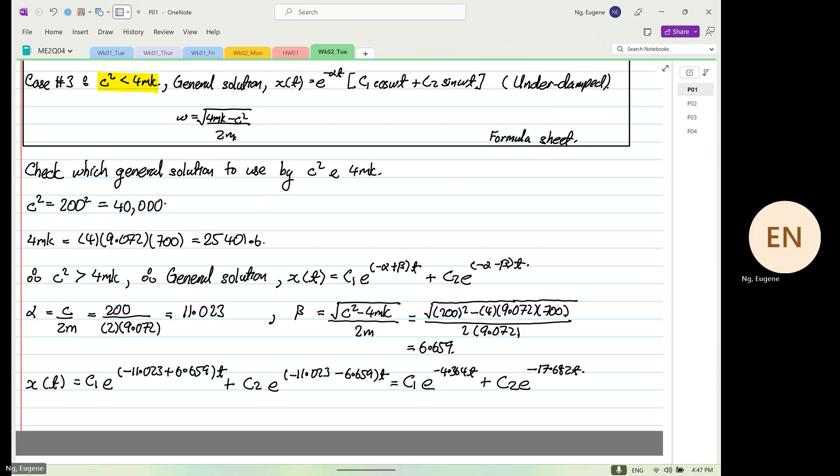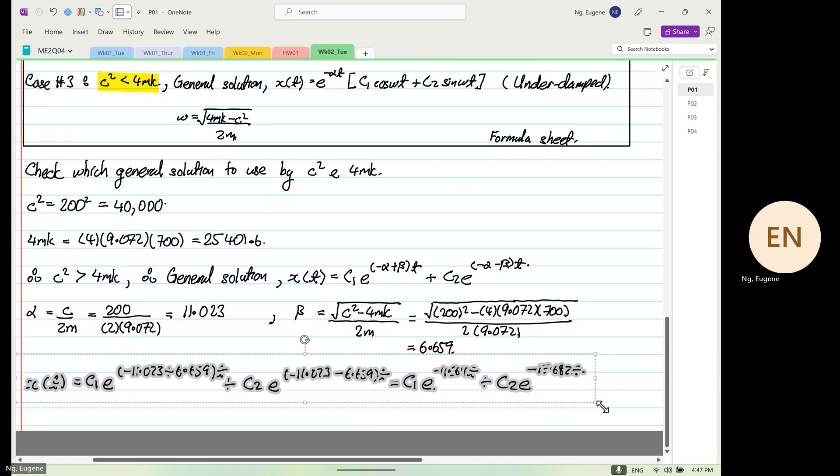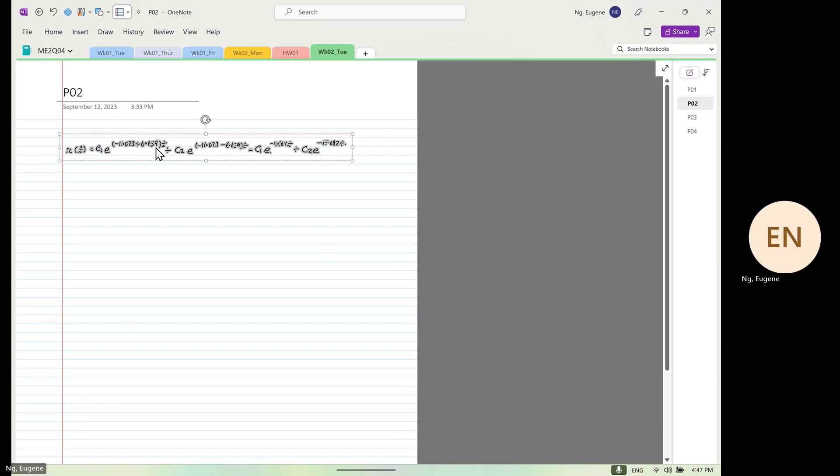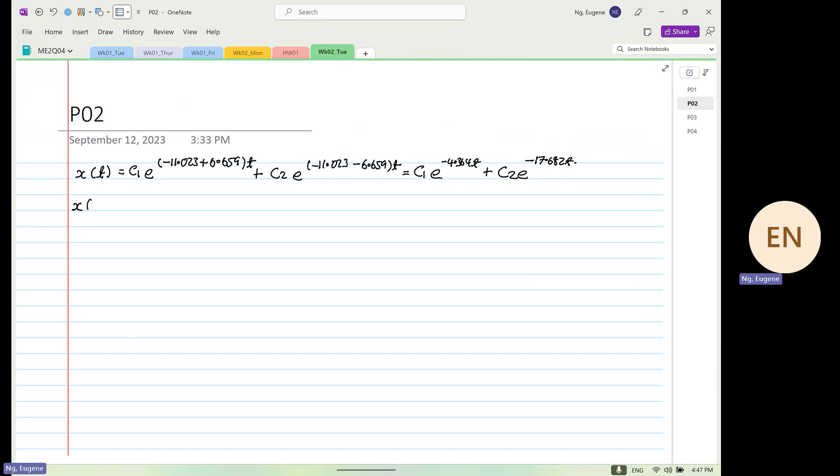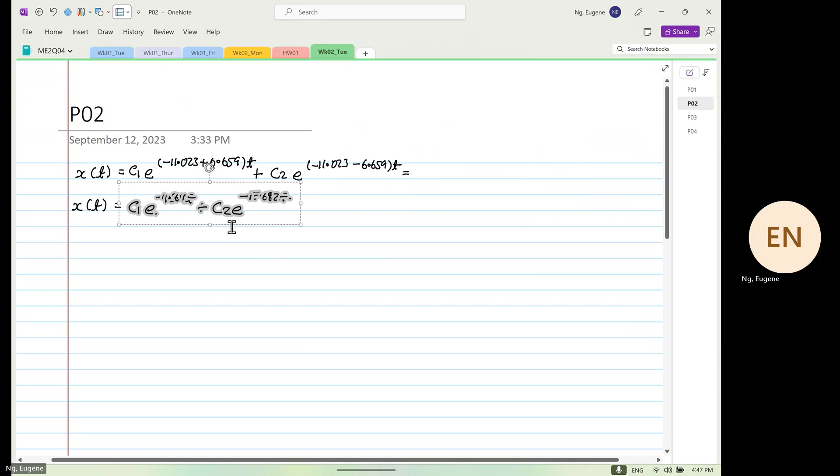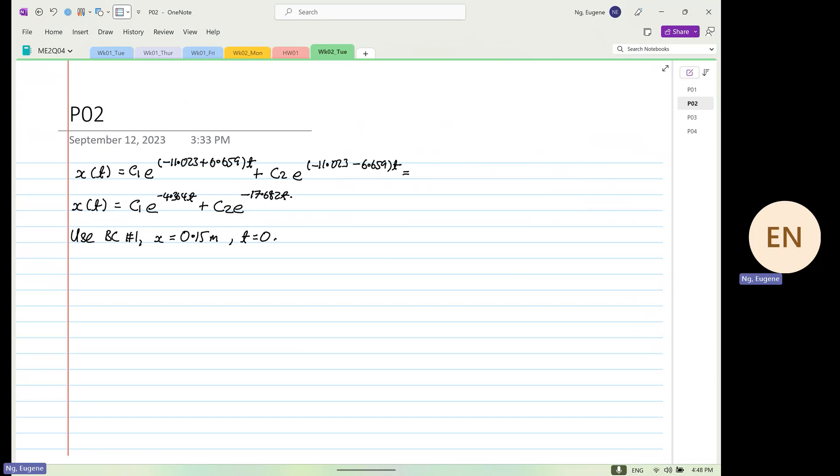So from here, I will copy the whole thing. All right. So from here, we know that x as a function of time will be equal to this value now. So now, we are going to use boundary condition number one which states when x is equal to 0.15 meters when t is equal to 0.